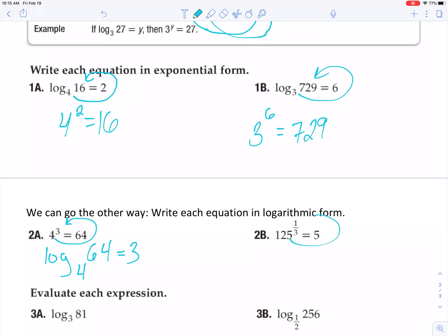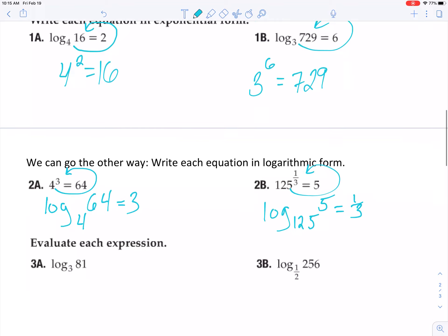Write it again, log base 125 of 5. So if I have a base 125, how do I get it to become 5? Take it to the 1/3rd power or cube root it.